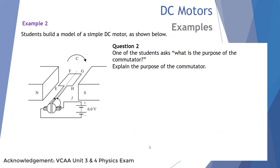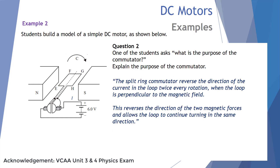Question 2: What is the purpose of the commutator? The split ring commutator reverses the direction of the current in the loop twice every rotation when the loop is perpendicular to the magnetic field (i.e., vertical). This reverses the direction of the two magnetic forces and allows the loop to continue turning in the same direction.